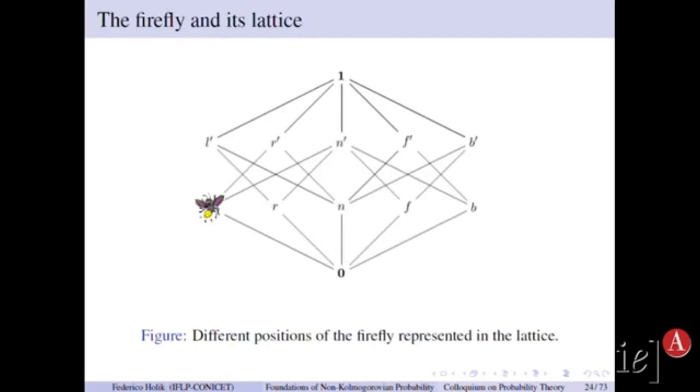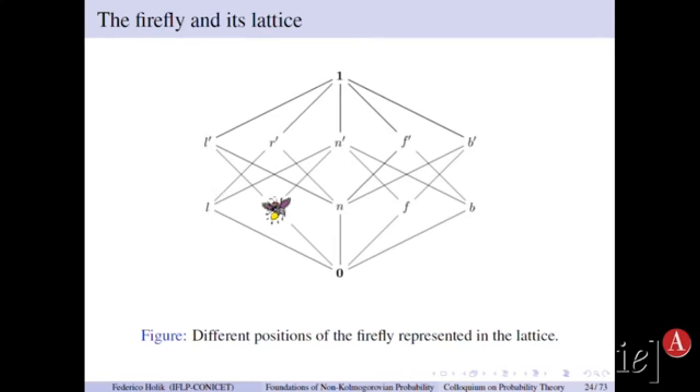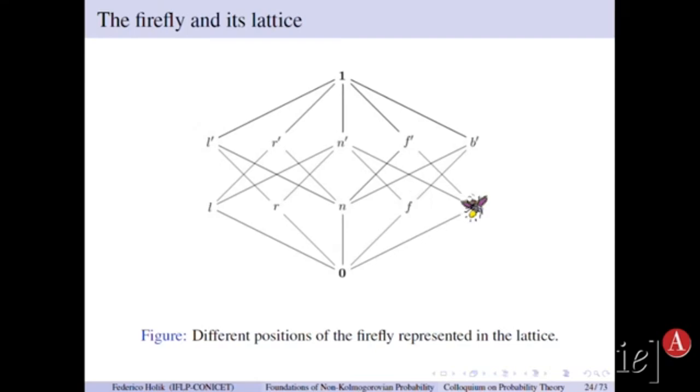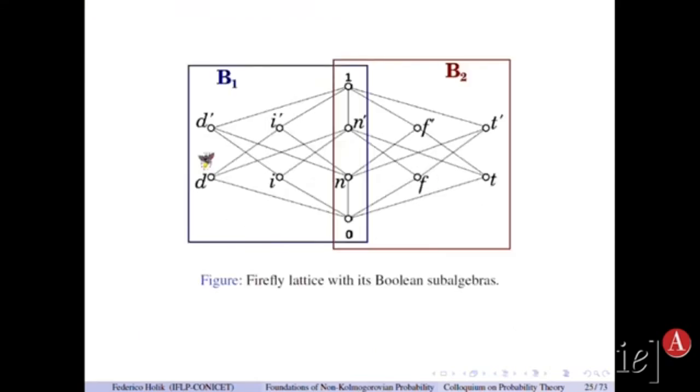I will show you why. So if you do the experiment, if you are on the left-right side, you can detect left, right, or no signal. Or if you do the other experiment, you can have front, bottom, and no signal. Okay? But then it turns out that if you look at this propositional structure, it is not a Boolean algebra, because it is a pasting of Boolean algebras. But the whole thing is not Boolean. For example, the distributive law that I mentioned before doesn't hold in this case. So you will have a Boolean algebra associated to the first experiment, a Boolean algebra associated to the second experiment, but the whole thing is not Boolean.